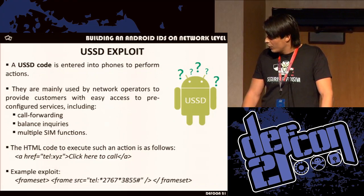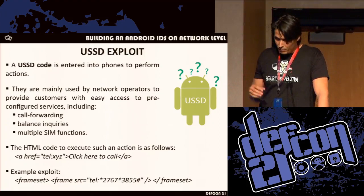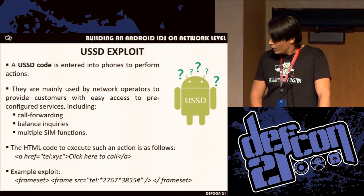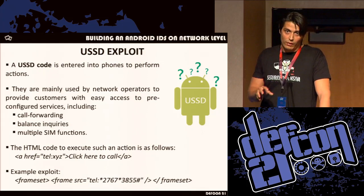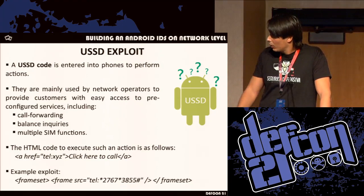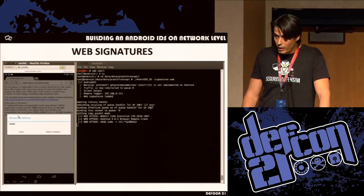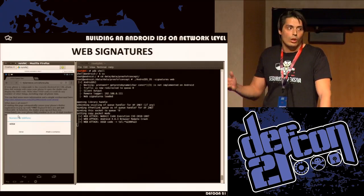Some of the exploits we have seen include the USSD code. The USSD code is a code entered into your phone to perform some actions — it's used by network providers to give users access to services like call forwarding. It links the browser to the phone application, meaning that when you visit a web page containing this code, the phone without human interaction will launch the telephone application. This exploit was published about a year ago, and we have several web signatures that can detect it. We can detect a WebKit code exploit, an Android browser remote crash, and the payloads.